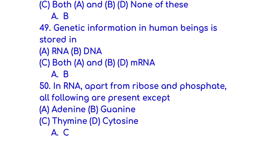Genetic information in human beings is stored in DNA. In RNA, apart from ribose and phosphate, all following are present except thymine.